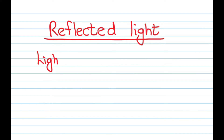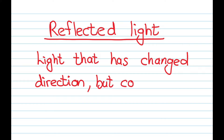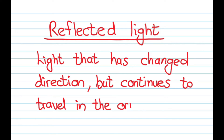So what is reflection? Reflected light is light that has changed direction. When you think of reflection, you should be thinking of changing direction, but the light continues to travel in the original material — which means if it was in air it continues in air, and if it was in glass it continues in glass.